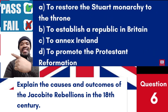Question 6: Explain the causes and outcomes of the Jacobite rebellions in the 18th century. a. To restore the Stewart monarchy to the throne. b. To establish a republic in Britain. c. To annex Ireland. d. To promote the Protestant Reformation. Answer: a. To restore the Stewart monarchy to the throne. The Jacobite rebellions were aimed at restoring the exiled Stewart monarchy to the throne of Britain.